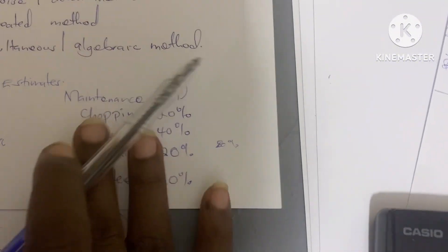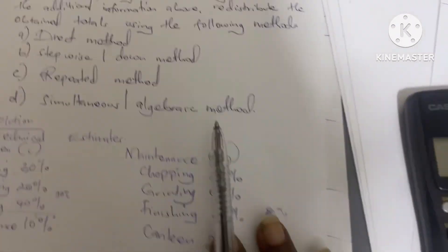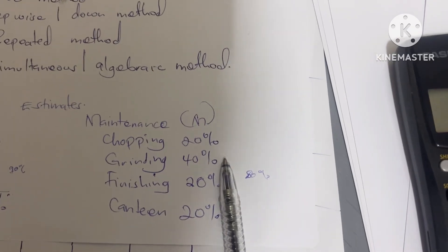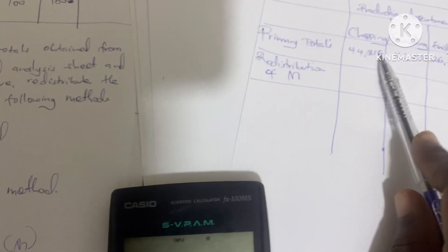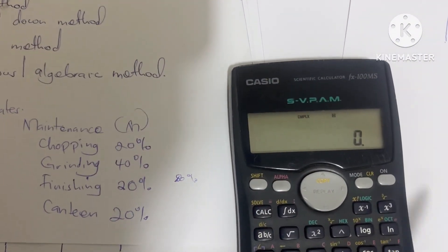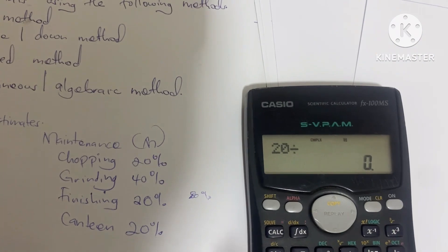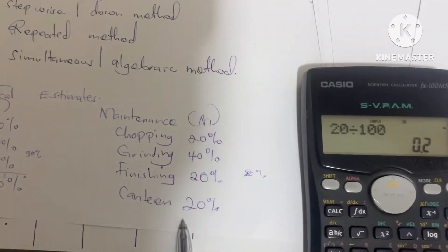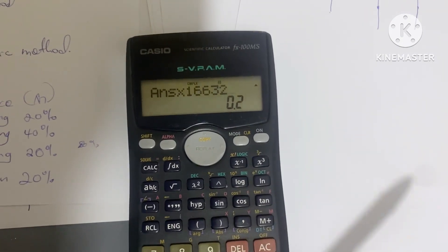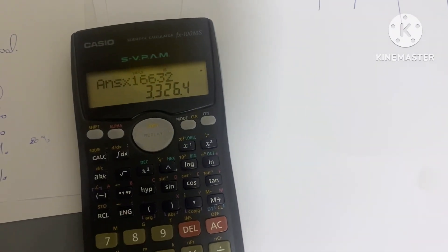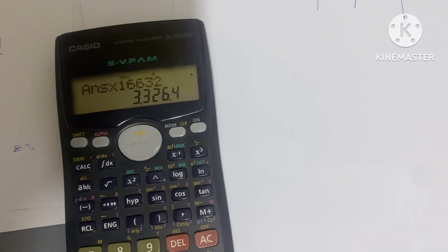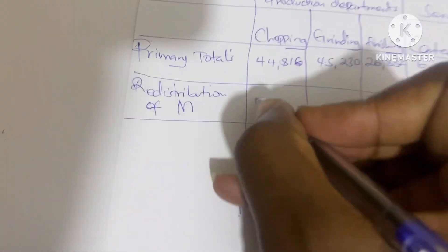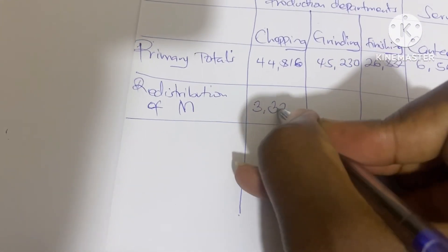These are the percentages we are using. For chopping it is going to be 20 out of 100 — since we are also going to give to canteen, this time it won't be 80, it will be the whole out of 100 — times what we are distributing, 16632. So that gives us 3326 for chopping.